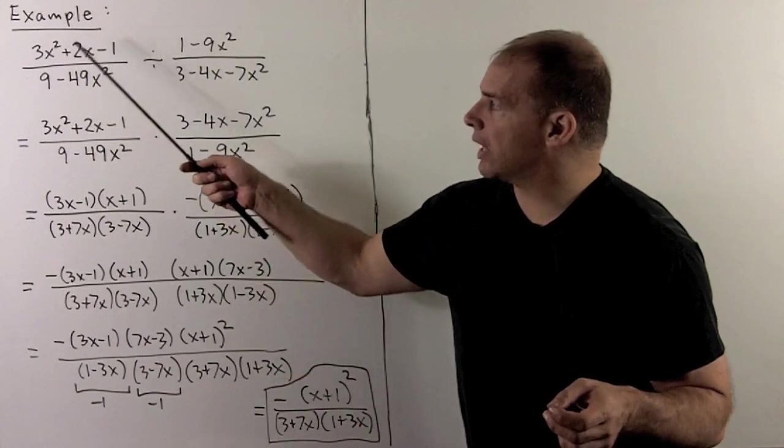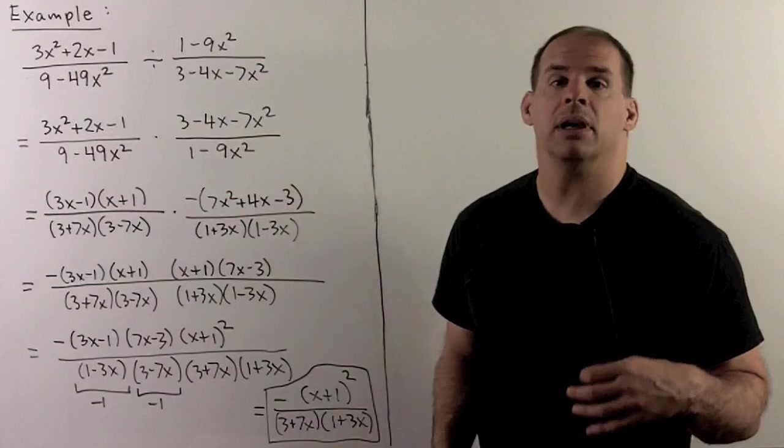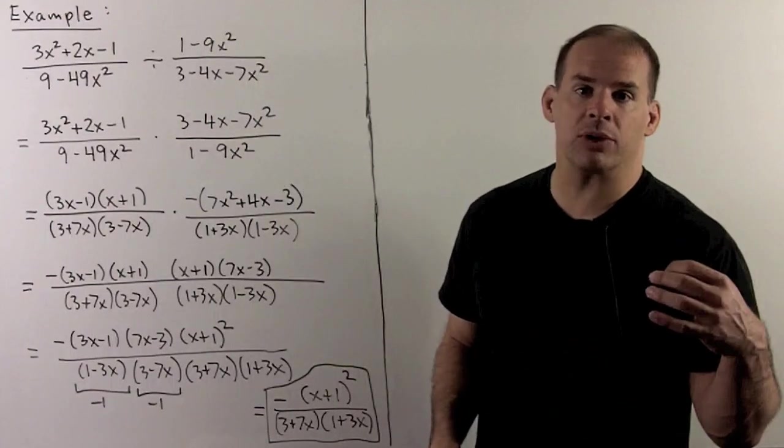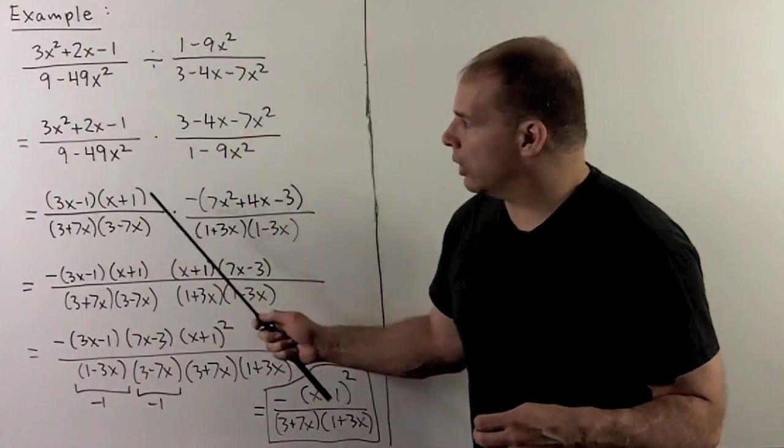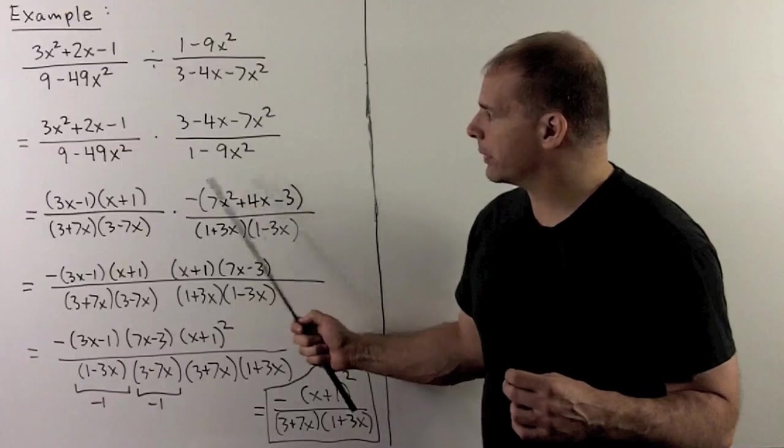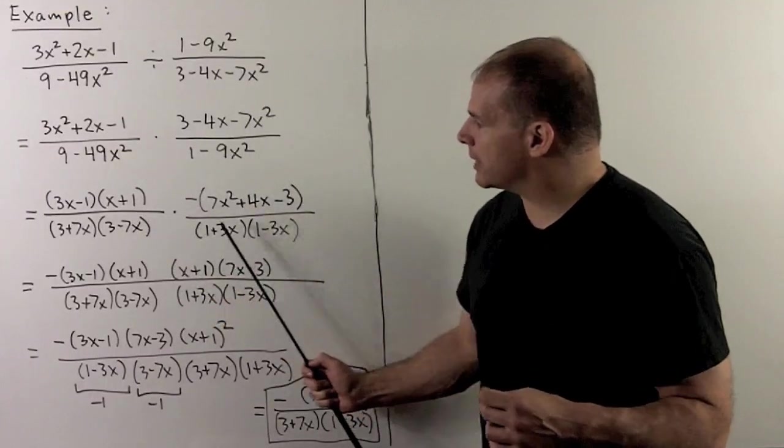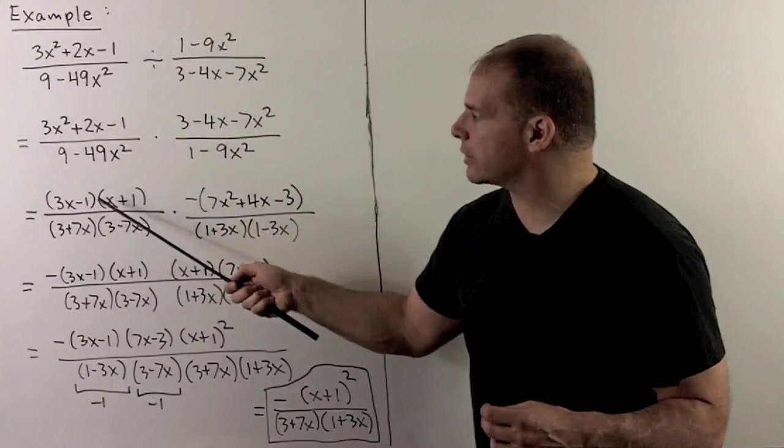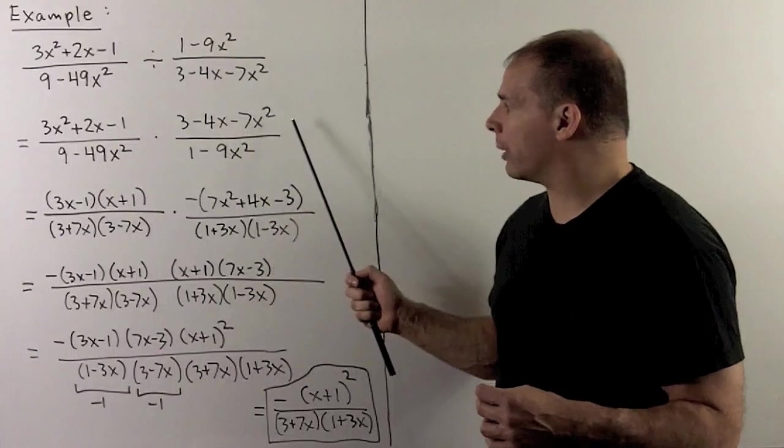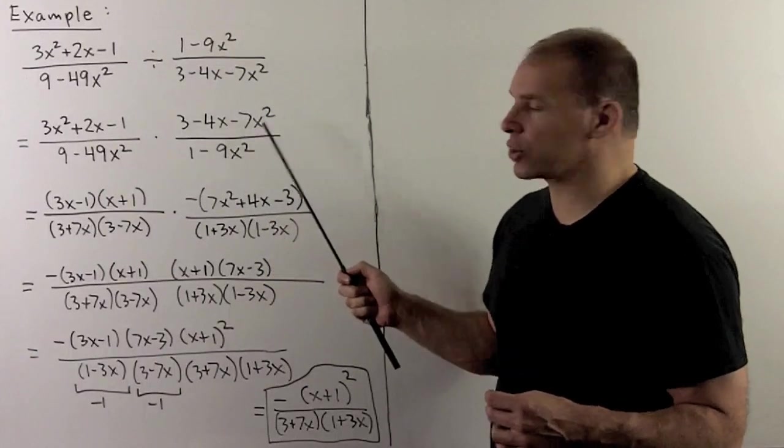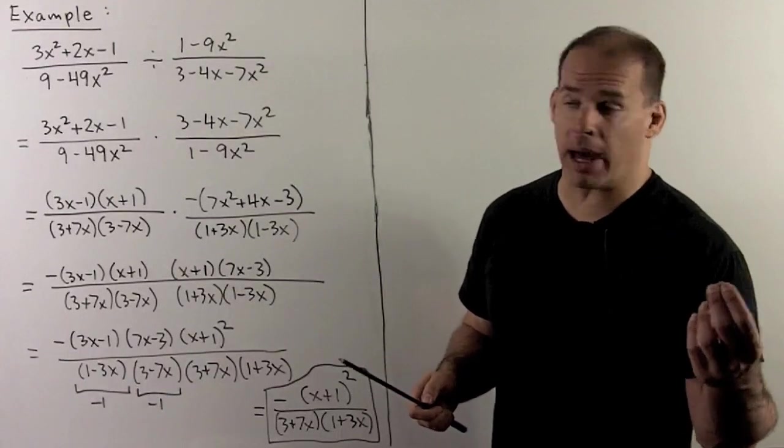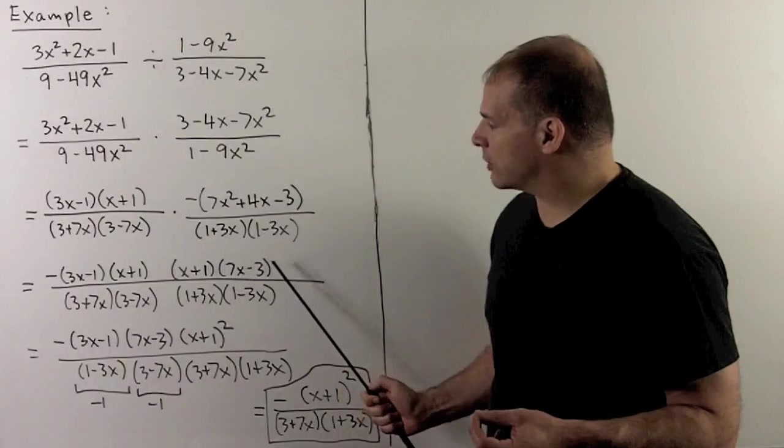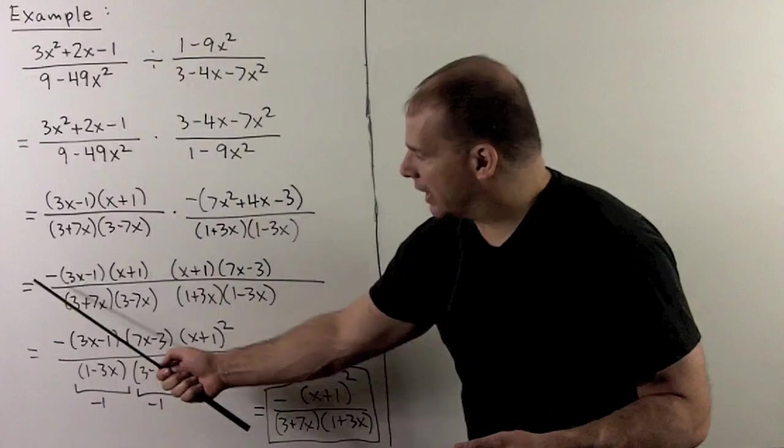For a final example, let's consider 3x squared plus 2x minus 1 over 9 minus 49x squared, divided by 1 minus 9x squared over 3 minus 4x minus 7x squared. We multiply by the reciprocal, then we factor. Now, we note, in the denominators, we have two differences of two squares, so we can factor these immediately. We could use what comes out of here to help us factor the numerators. Over here I'll have 3x squared plus 2x minus 1 goes to 3x minus 1 times x plus 1. For this term, I want to get the minus sign off of our lead, so I want the x squared to have a positive term in front of it. So we're going to factor out a minus 1. So it's really 7x squared plus 4x minus 3. Now that'll factor as 7x minus 3 times x plus 1.